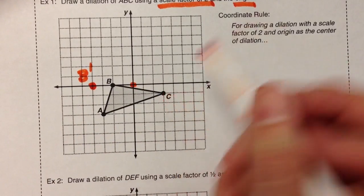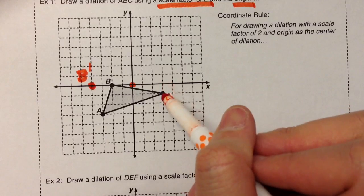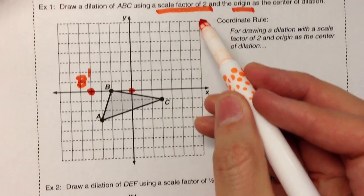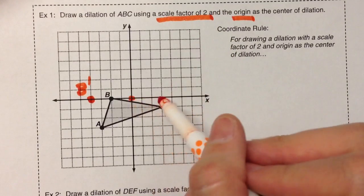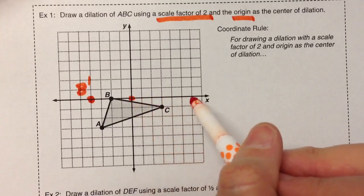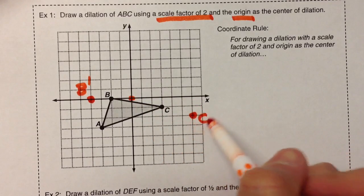Point C is three steps to the right and one step down, multiply it by your scale factor of two. Three by one, six by two, there's your C'.